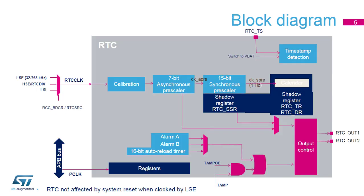Here is the RTC block diagram. The RTC has two clock sources. The RTC clock, or RTC CLK, is used for the RTC timer counter. And the APB clock is used for RTC register read and write accesses.